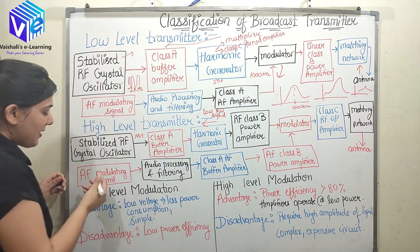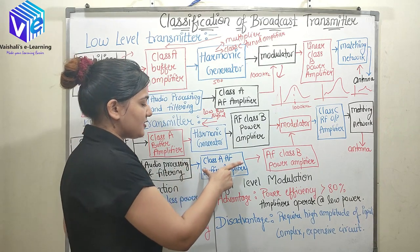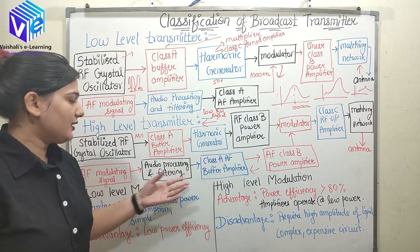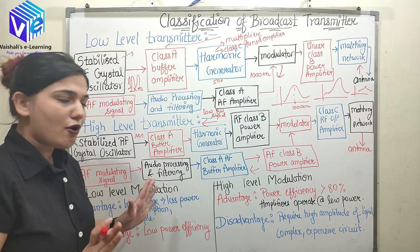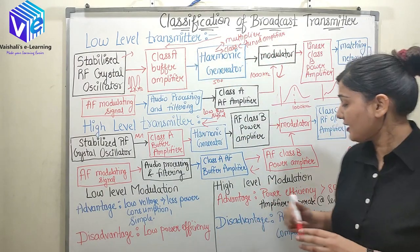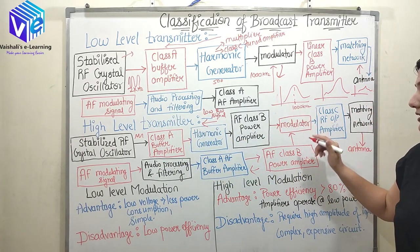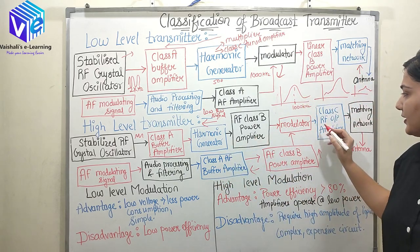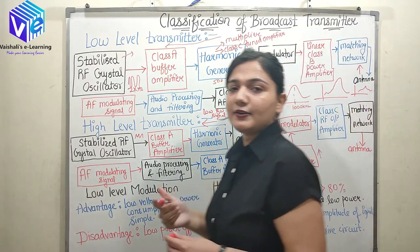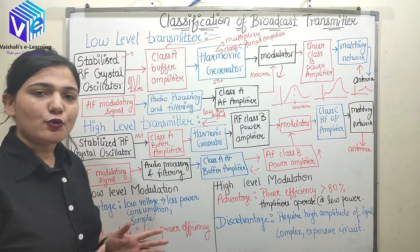On the message signal side, the AF modulating signal passes through audio processing and filtering, then through a class AF buffer amplifier to restrict backward load current, and then through a class B power amplifier to increase its power. So two high power signals — the carrier and the message — are fed into the class C amplifier (modulator). The output is then passed through the matching network to minimize power loss, and through the antenna, which converts the signal into an EM wave transmitted into space.